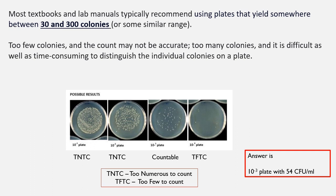Too few colonies can indicate something went wrong while performing your spread plate or while pipetting out 0.1 ml — so it may not be an accurate result. Too many colonies — designated TNTC, meaning Too Numerous To Count — makes it very difficult and time-consuming to count colonies growing near each other. When colonies are very close together, it is difficult to distinguish each individual colony on the plate.